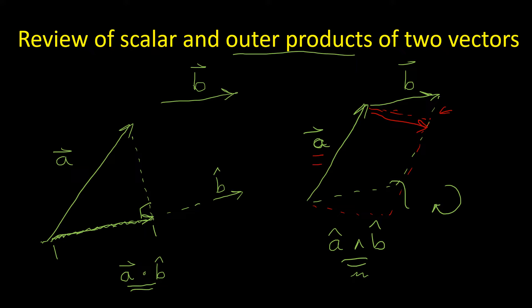The dot product of two vectors captures information about their parallel aspects, or the component of a that's parallel to b. The wedge product captures the perpendicularity of the two vectors. From these two pieces of information, we can solve many different problems.